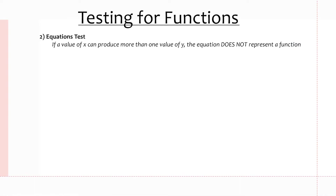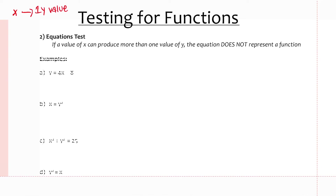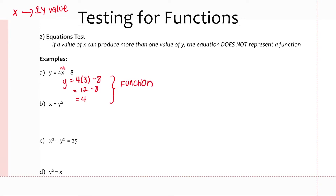The second way to test for a function is the equations test. If a value of x can produce more than one value of y, the equation does not represent a function — you're looking for one x value to produce one y value. For example, if I substitute x equals 3 into y equals 4x minus 8, I get y equals 12 minus 8, which equals 4. I can pick any x value — 3, 4, 5, 6, 7 — and I will only get one y value. So that equation represents a function.